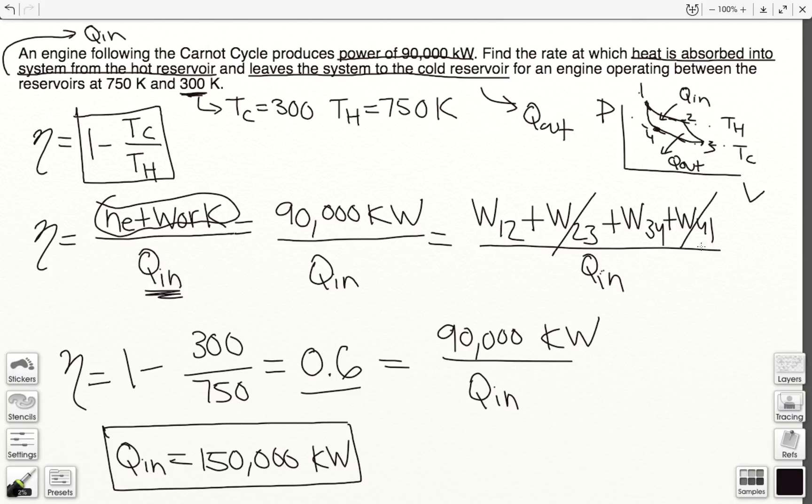So, this is going from 2 to 3, and this is going from 4 to 1, to the exact opposite direction, from Tc to Th. This work is equal to Q_in.